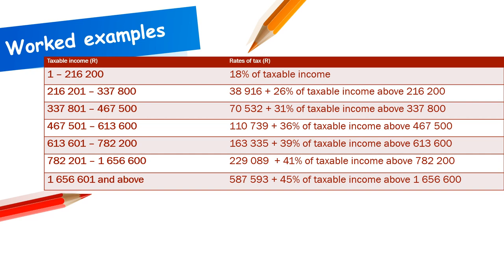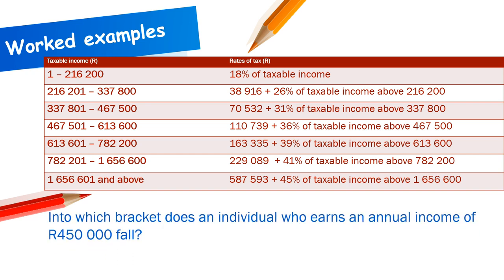Worked example: into which bracket does an individual earning an annual income of R450,000 fall? Since R450,000 falls between R337,000 and R467,000, the correct allocation is bracket number three.